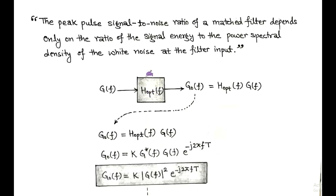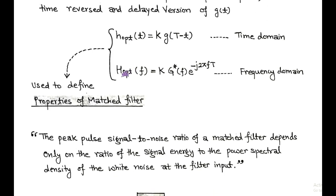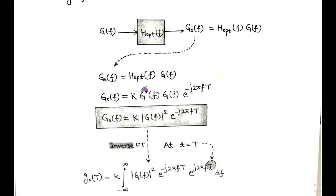For this derivation, we take the frequency domain representation of the matched filter, having G(f) as the input signal. The output of this matched filter is G0(f), which equals the product of H(f) and G(f) in the frequency domain. In place of H(f), we write k times G*(f) e to the power minus j2πfT. Since the product of any complex function with its complex conjugate equals the square of the modulus, G0(f) equals k|G(f)|² e to the power minus j2πfT.